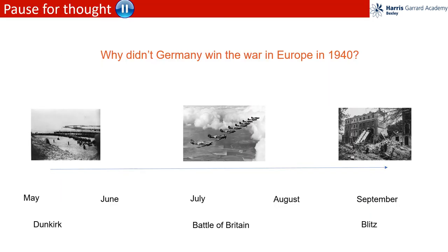In the summer of 1940, Britain, even though they had the resources of the empire, was all alone in Europe. France had been defeated, the USSR and the USA were not getting involved, and the war in Europe seemed to be on a knife edge. Yet Germany didn't take full advantage of this. Pause for thought — think about why this was. Perhaps it was due to the strengths of the British and the people of the empire. As well as mistakes made — was it a case of missed opportunities perhaps? Have a think and make a note of your ideas.